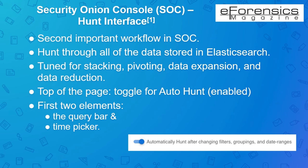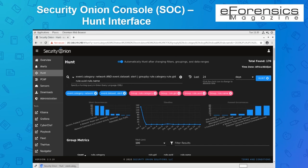The query bar drop-down box and time picker option are the first two elements exposed on this interface. On performing a query, Hunt will exhibit the number of events found in the upper right. A toggle key option for auto hunt is available at the top of the page and is enabled by default. When enabled, the Hunt interface will automatically submit the query any time you change groupings, filters, or date ranges. In the Hunt interface you can see all different data types, whereas the Alerts interface shows only alerts.